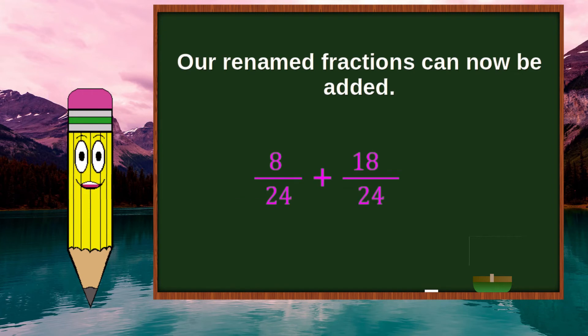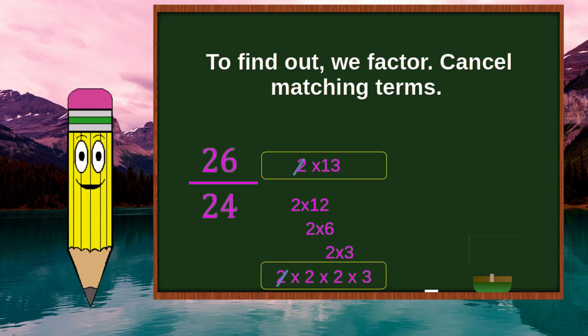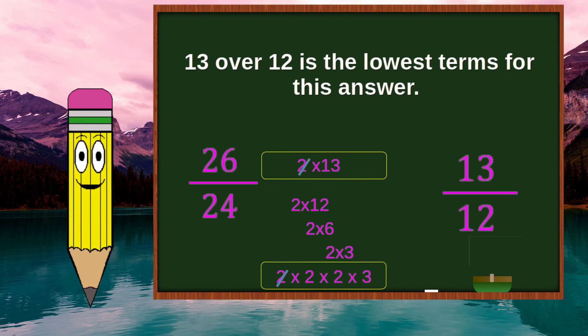Our renamed fractions can now be added. Now we have added the fractions. Can we put the answer in lower terms? To find out, we factor. Cancel matching terms. 13 over 12 is the lowest terms for this answer.